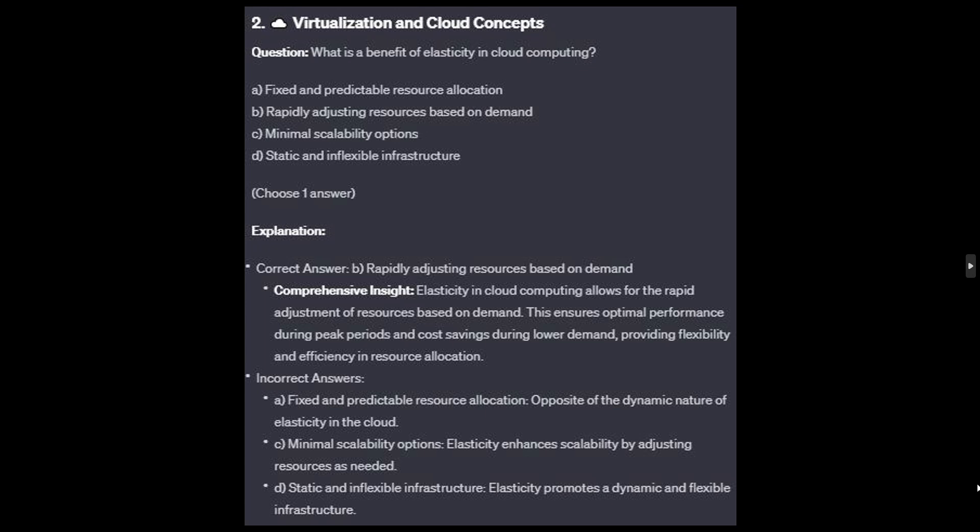For the incorrect answers: fixed and predictable resource allocation is the opposite of the dynamic nature of elasticity in the cloud. Minimal scalability options — elasticity enhances scalability by adjusting resources as needed. And static and inflexible infrastructure — elasticity promotes a dynamic and flexible infrastructure.